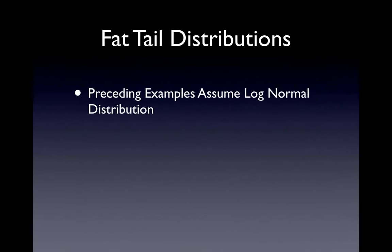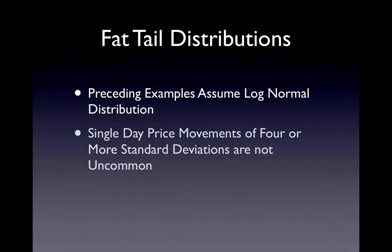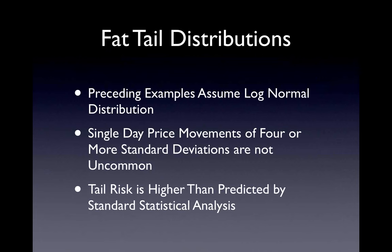The preceding examples assume that price returns follow the log-normal distribution. However, very few equities actually exhibit this behavior. In the real world, price fluctuations are subject to shocks caused by corporate actions, natural disasters, political turmoil, and other exogenous events. Single-day price moves of four or more standard deviations are not uncommon. This means the probability of extreme changes is higher than predicted by the normal distribution, leading to understatement of probable profit at the tails. In fact, there are many techniques employed by professional risk managers that apply adjustments to the normal distribution — these parametric approaches attempt to account for extreme return fluctuations in a generalized way.